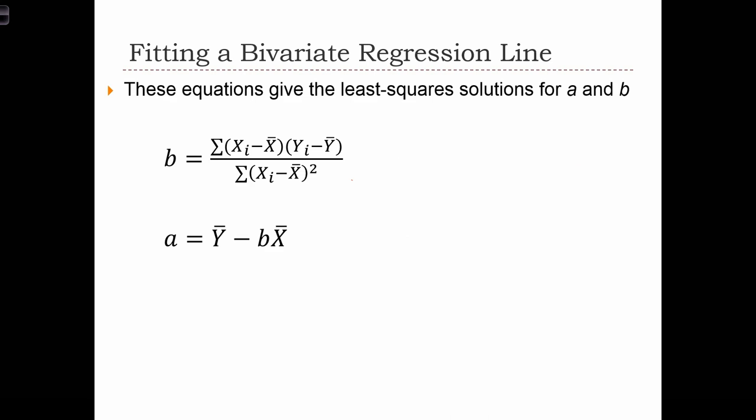By solving the optimization problem, we end up with deterministic equations for the regression coefficients, the slope B, and the constant A. Let's look at the equation of the slope to see what's going on.